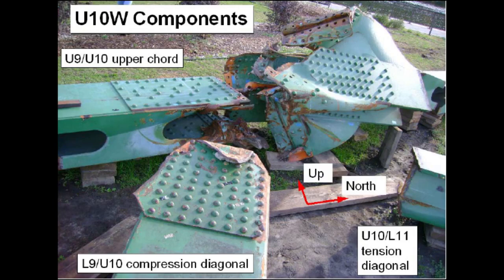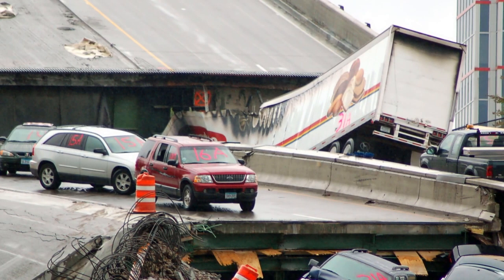The cause of the collapse was twofold. The U-10 gusset plates were inadequately designed due to a calculation error from the original bridge design firm, causing the U-10 gusset plates to be half the thickness they should have been. This error may have remained unnoticed if it wasn't for additional weight on the barriers, guardrails, and pavement added to the bridge since its construction, along with construction equipment that was on the bridge at the time of collapse.